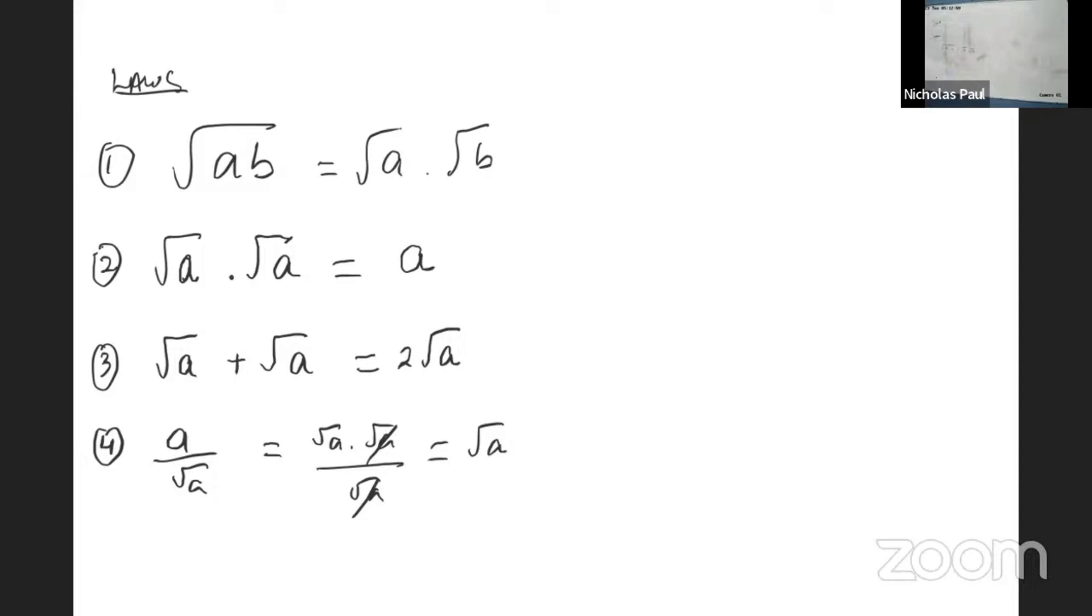Let's say I gave you three. Three can be written using this rule here. Three can be written root three multiplied by root three, correct? And if you divide it by root three, you'll get root three. That's the rule there.